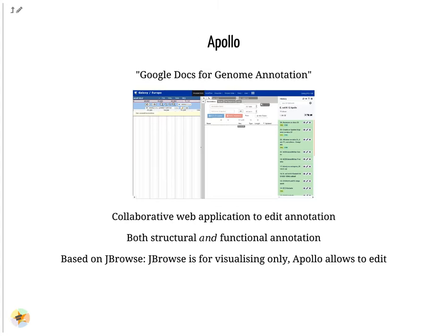Apollo is a web application specifically designed for the manual curation of annotations. You can think of Apollo as the Google Docs of annotation — it is a multi-user, real-time, collaborative environment. Users can easily change the structure of genes and add functional annotation like gene names or gene ontology terms. Apollo is based on JBrowse: JBrowse is for visualizing genomes, while Apollo adds the editing capabilities.